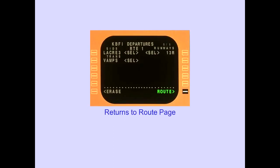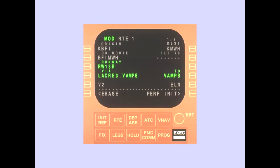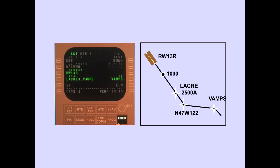The route prompt enables the flight crew to return to the route page. The letters MOD at the top of the page and the illuminated execute key light indicate the original route has been modified by adding the departure procedure. Notice that the runway and SID transition are displayed on the route page. Pushing the execute key incorporates the runway and departure procedure into the active route. The letters ACT are displayed at the top of the page and the execute key light extinguishes.